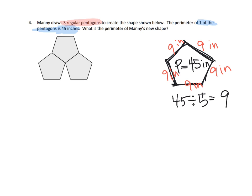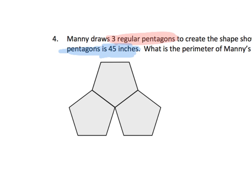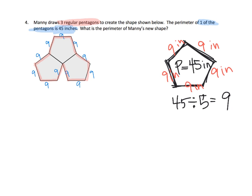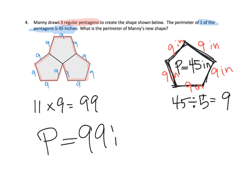That means if we zoom in, each one of these sides is 9 inches. If we wanted to find the perimeter of this entire figure, we count the exterior sides: that's 1, 2, 3, 4, 5, 6, 7, 8, 9, 10, 11. So we have 11 nines. Adding up 11 nines is easy: 11 times 9 gives us 99. So the perimeter of this figure is 99 inches.